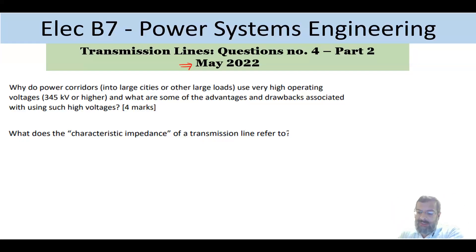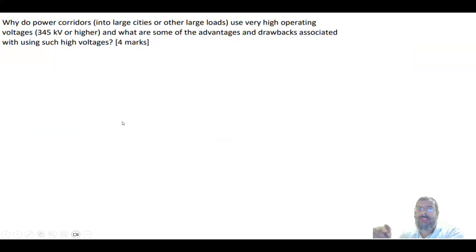Let's see how this question can be addressed. The question says why do power corridors into large cities and large loads use very high operating voltages? So we use these high voltages when we supply large loads.